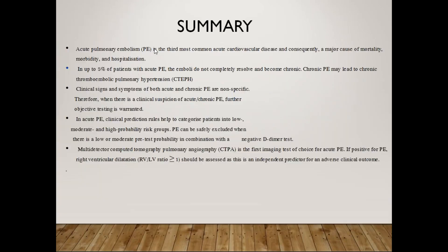In summary: acute pulmonary embolism is the third most common acute cardiovascular disease and a major cause of mortality, morbidity, and hospitalization. Clinical symptoms of both acute and chronic pulmonary embolism are non-specific. In acute pulmonary embolism, clinical prediction rules categorize patients into low, moderate, and high probability risk groups. Pulmonary embolism can be safely excluded when there is a low or moderate pre-test probability in combination with a negative D-dimer test. Multi-detector CT pulmonary angiography is the first imaging test of choice for acute pulmonary embolism. If positive for pulmonary embolism, right ventricular dilatation should be assessed as it is an independent predictor for adverse clinical outcome.